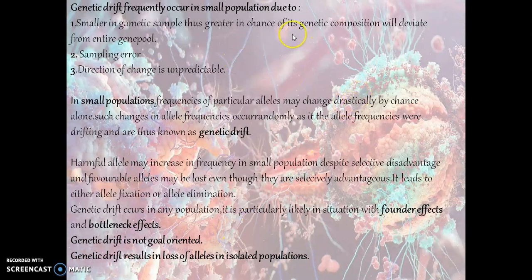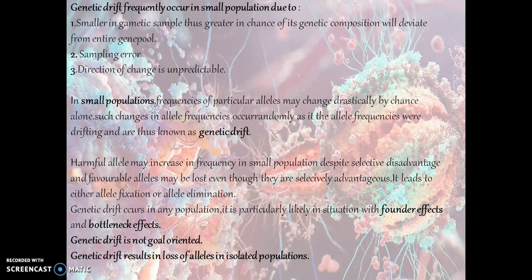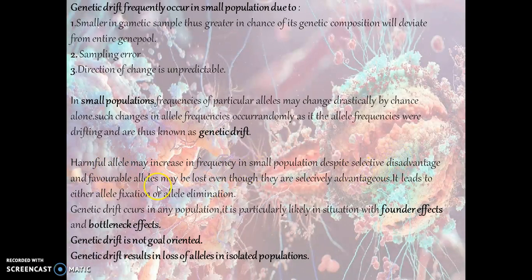Genetic drift frequently occurs in small populations due to smaller gametic sample size, thus there is a greater chance that genetic composition will deviate from the entire gene pool. This is due to sampling error — a deviation from expected ratios due to limited sample size. In small populations, frequency of particular alleles may change drastically by chance. Harmful alleles may increase in frequency despite selective disadvantage, and favorable alleles may be lost even though they are selectively advantageous.